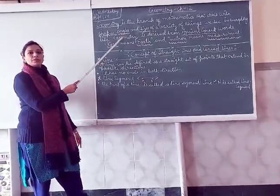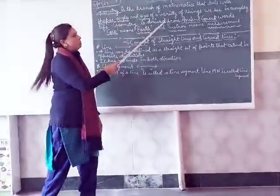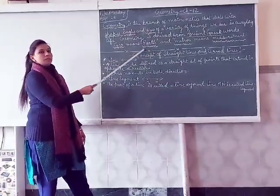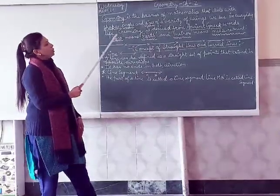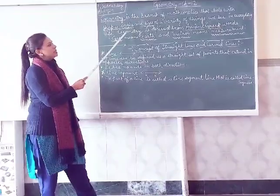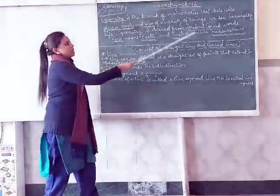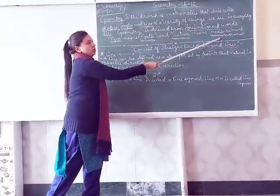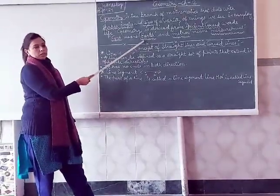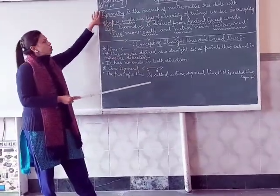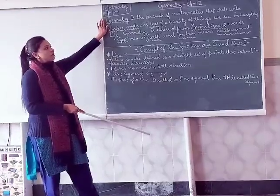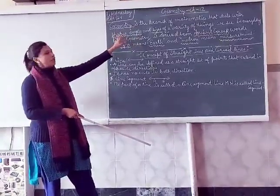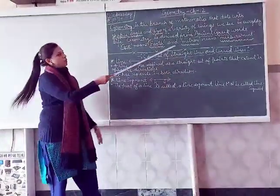Now, where does the word geometry come from? What is the origin of that word? Geometry is derived from ancient Greek words — two words: geo plus matron. Geo means earth and matron means measurement. So geometry is a combination of two words, geo and matron, where geo means earth and matron means measurement. It deals with shapes, angles, and sizes of a variety of things which you see in your everyday life.